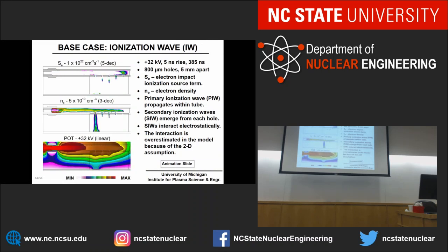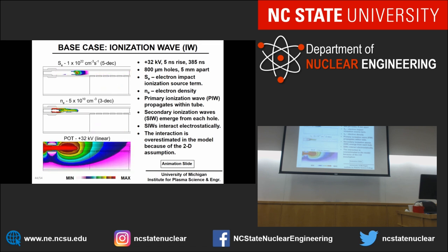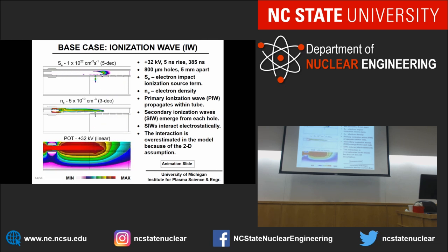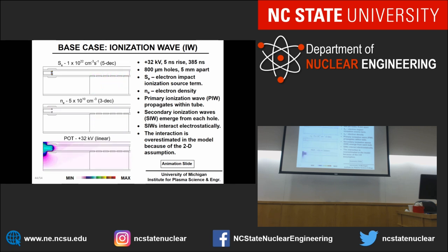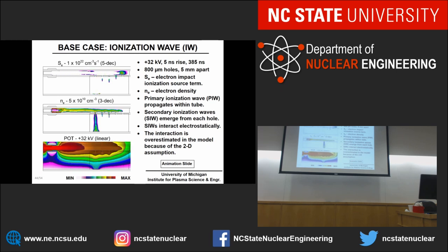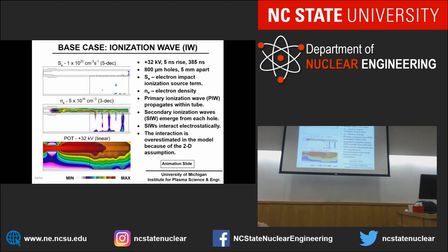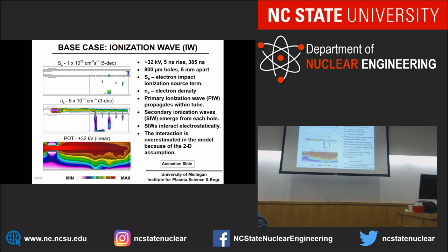When we apply a high voltage, a primary ionization wave propagates from left to right, and secondary ionization waves branch off through the holes. We already see significant interaction between these secondary ionization waves — propagation is skipped in the second hole due to electrostatic interaction between waves. The potential gives some idea of how this electrostatic interaction occurs. Once a conductive channel forms, there's a re-strike behavior where the potential evolves.